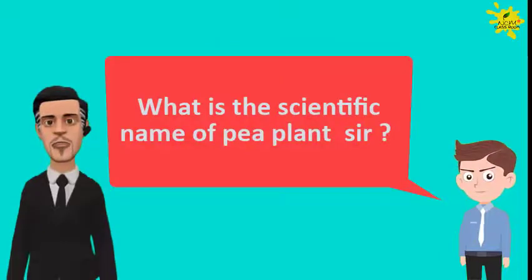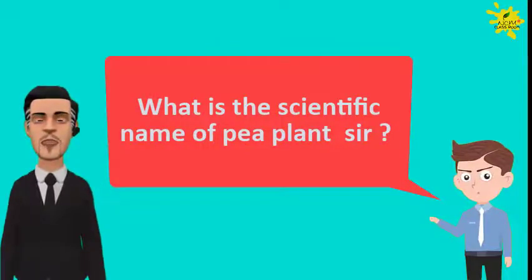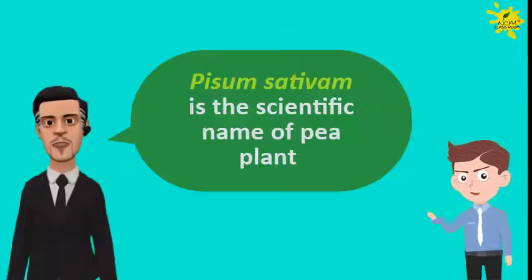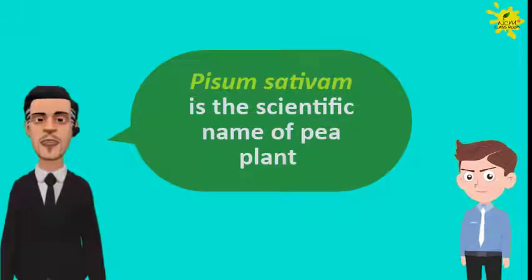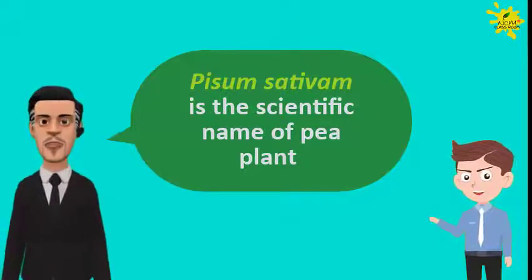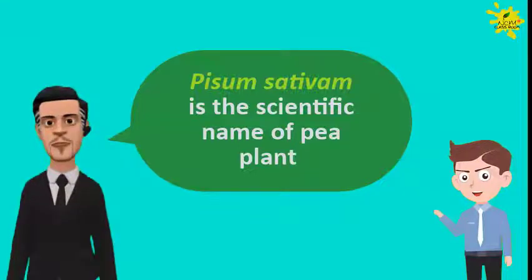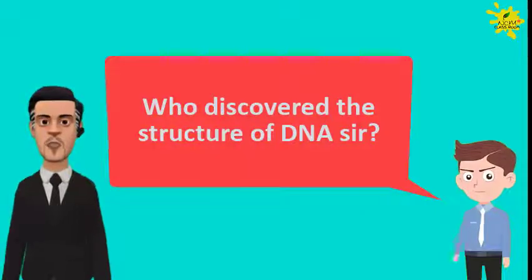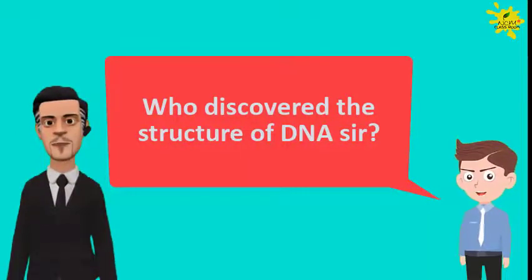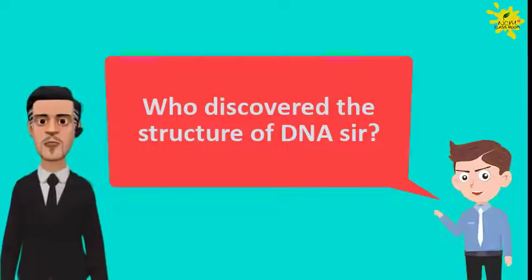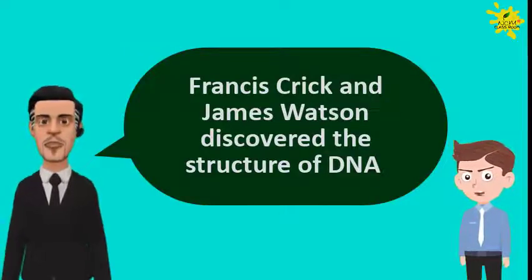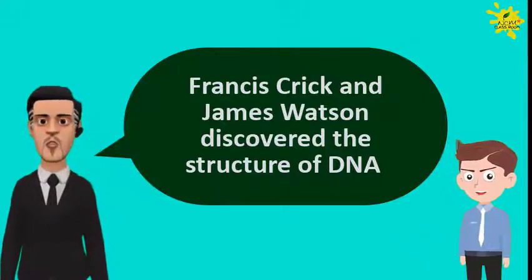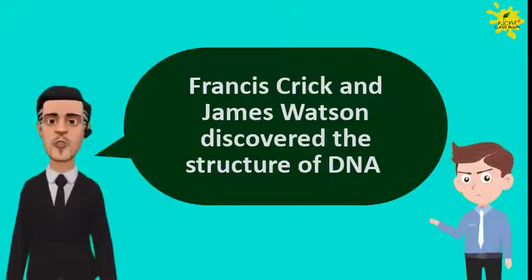What is the scientific name of pea plant, sir? Pisum sativum is the scientific name of the pea plant. It has two words, one genus and one species. This is binomial nomenclature. Who discovered the DNA structure, sir? Francis Crick and James Watson discovered the structure of DNA. DNA means deoxyribonucleic acid. It's a genetic material.